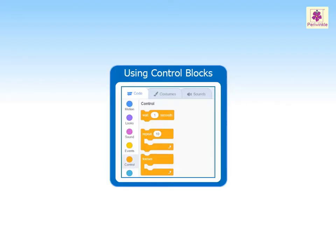The control blocks help to manage the execution of a script. Control blocks control the execution of a set of blocks until a given condition is fulfilled. In some circumstances, control blocks are also used to initiate or halt the execution of a script. The control blocks are used in combination with motion blocks, pen blocks, etc. Let's learn how to use control blocks.